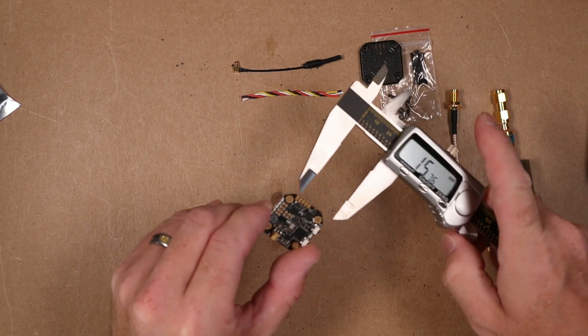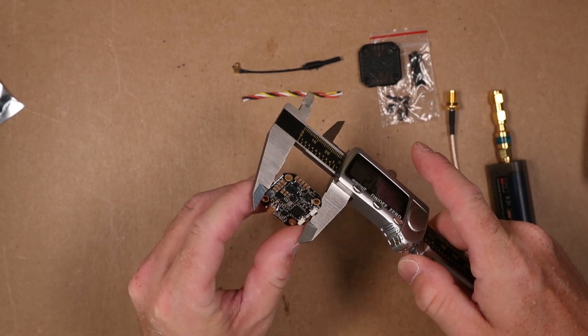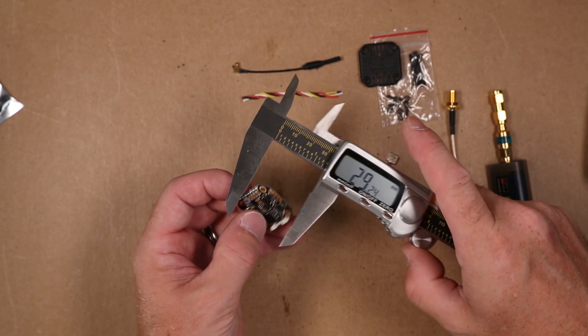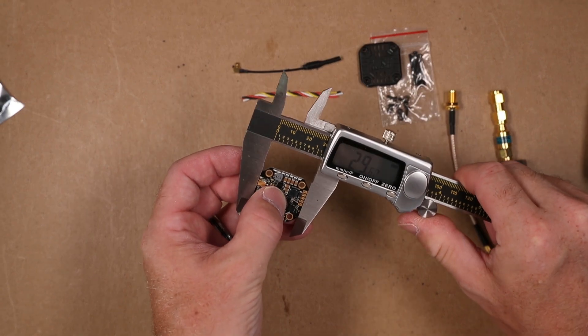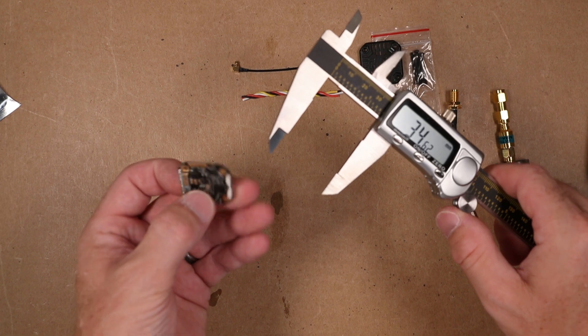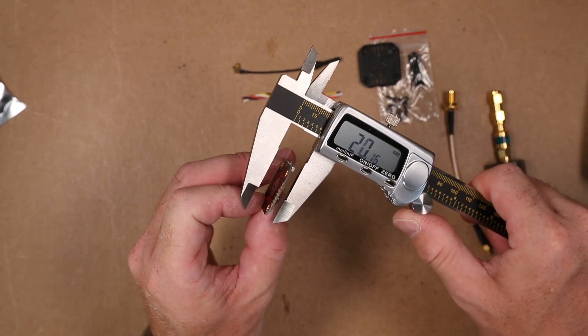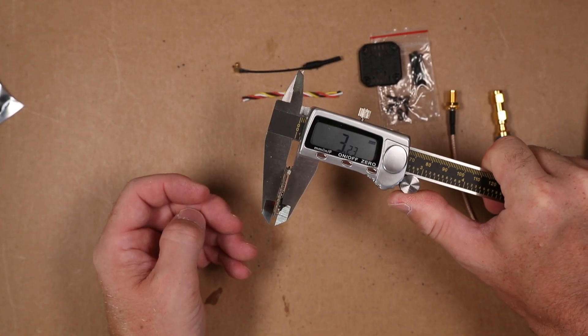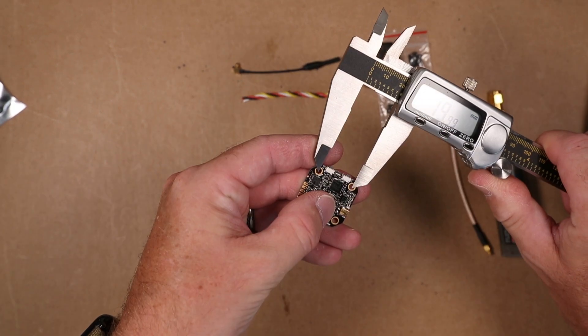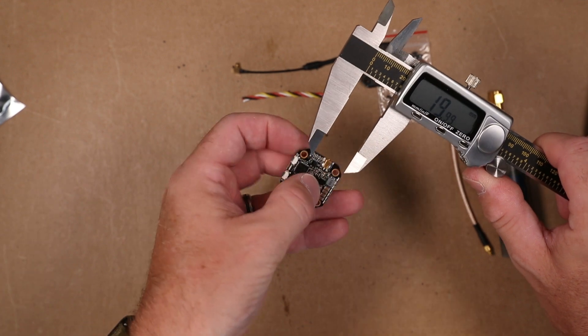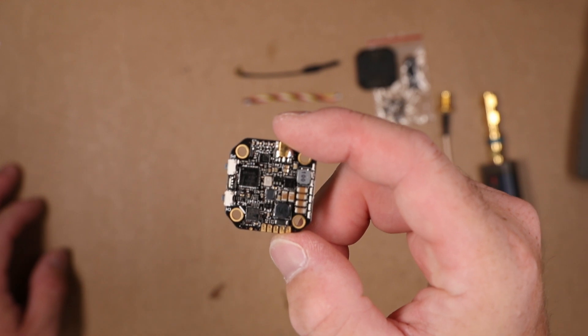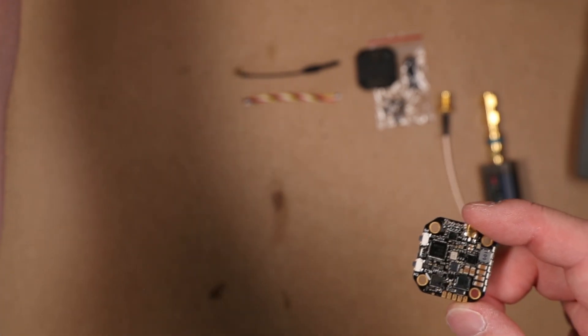This guy measures in at, I'll measure with the button, 29.24 by 28.9, and at the thickest portion. The stack holes are roughly 20 by 20, so they have crammed a lot into this little VTX.